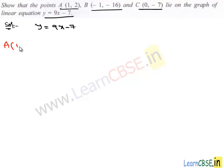we take point A. To show that A lies on this linear equation, we have to take the x coordinate and find its corresponding y coordinate. Let us substitute the value of x in this equation. We get y = 9 times 1 minus 7, which equals 2. Therefore,